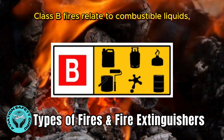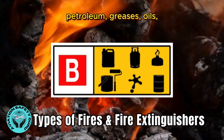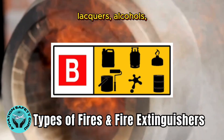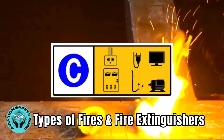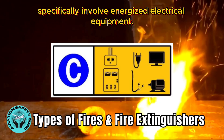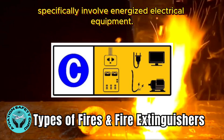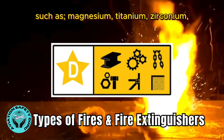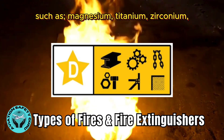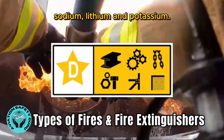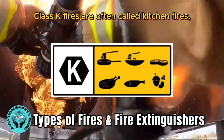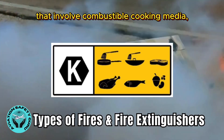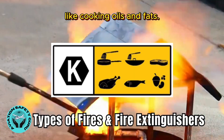Class B fires relate to combustible liquids, petroleum greases, oils, oil-based paints, solvents, lacquers, alcohols, and inflammable gases. Class C fires specifically involve energized electrical equipment. Class D fires involve combustible metals such as magnesium, titanium, zirconium, sodium, lithium, and potassium. Class K fires are often called kitchen fires, associated with cooking appliances that involve combustible cooking media like cooking oils and fats.